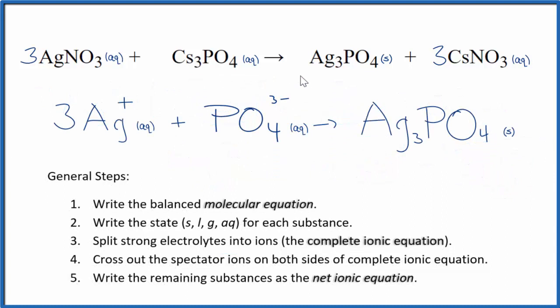So this is the balanced net ionic equation for silver nitrate and cesium phosphate. You'll note that charge is conserved. We have three times one plus. That's three plus, but we have this three minus. So this all adds up to zero. On this side, we have a neutral compound. So net charge is zero. Charge is conserved. And if you count the atoms up, they'll be balanced as well.